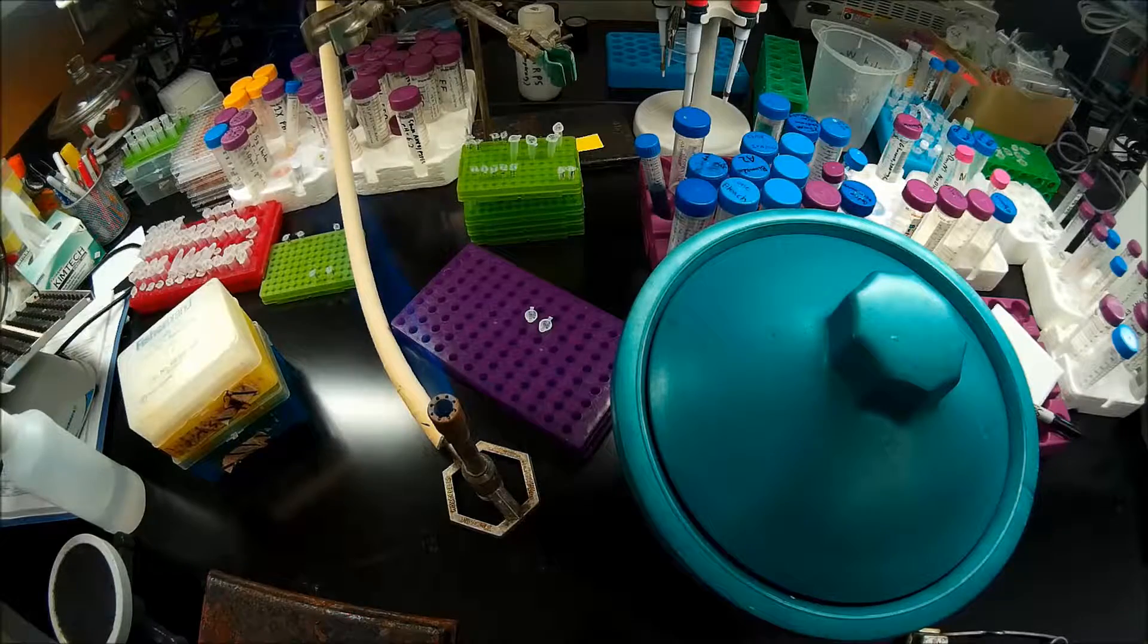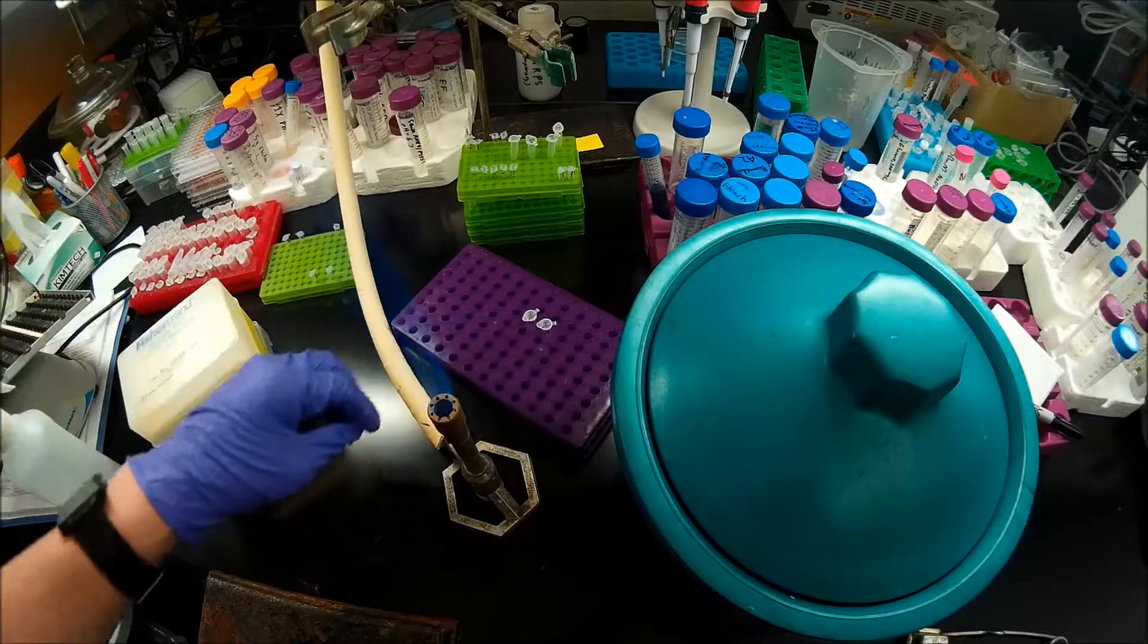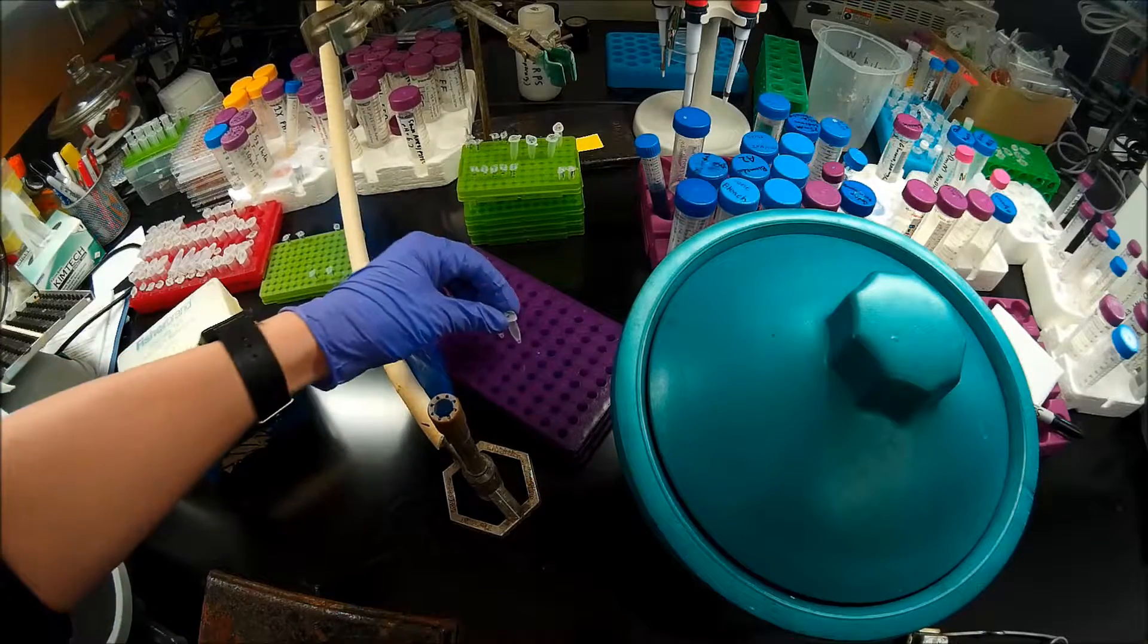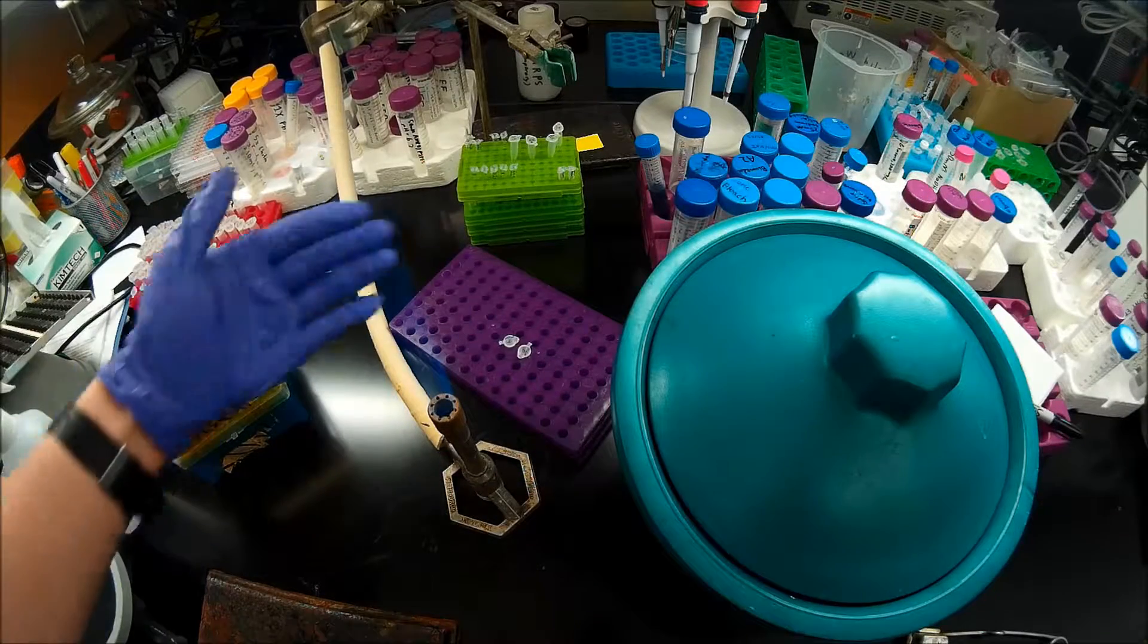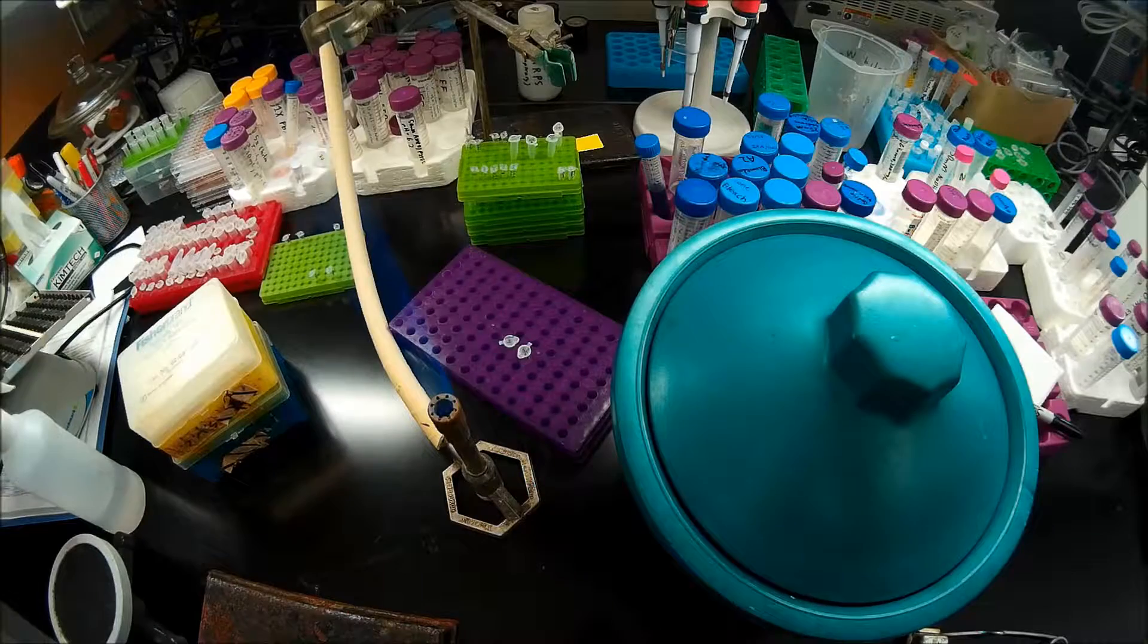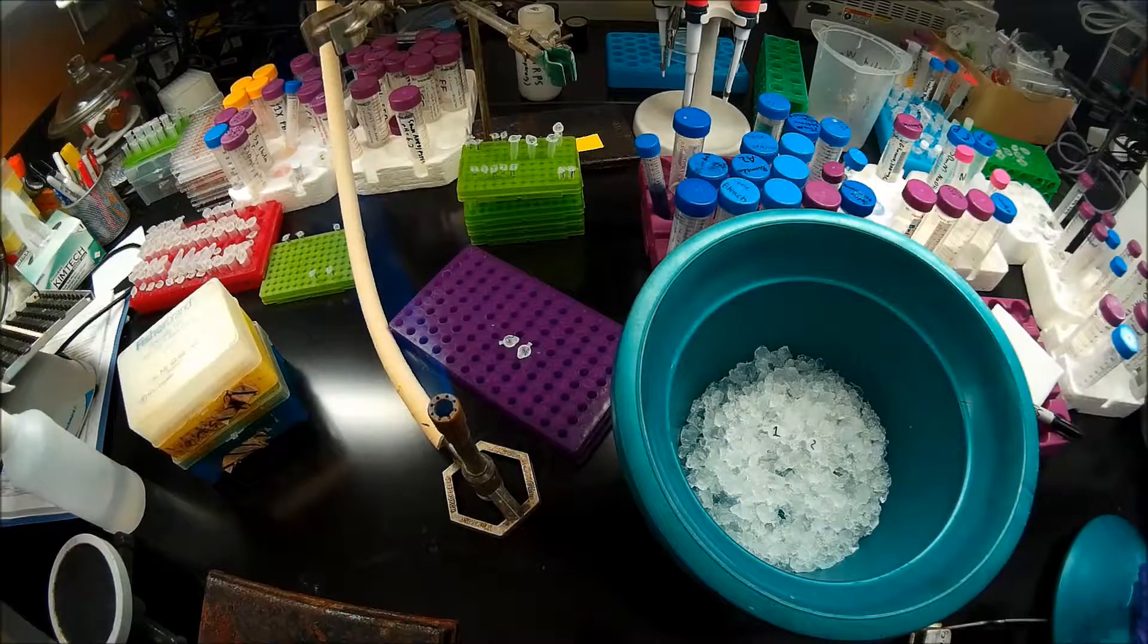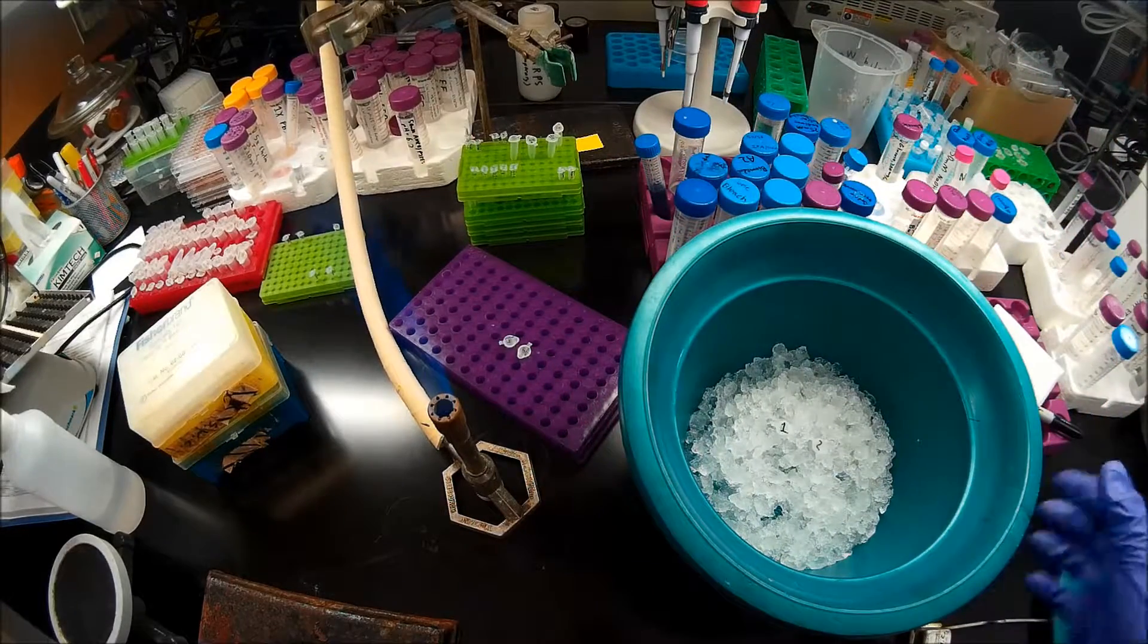After allowing my competent cell aliquots to thaw for about 10 minutes, I want to add DNA to them. These are ligation mixtures, but the procedure would basically be the same if you were adding whole plasmid. You'll note that I am working under a flame here. I'm trying to maintain aseptic technique. So I have my two aliquots of competent cells there.